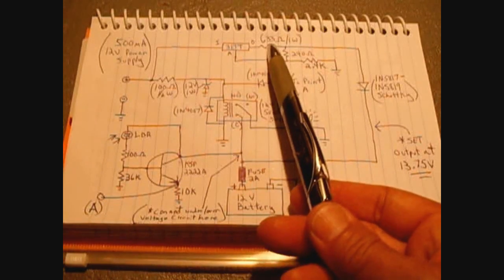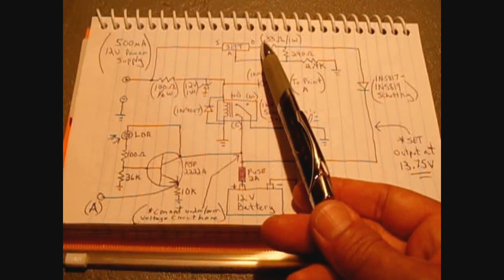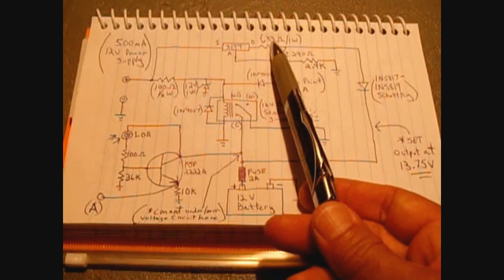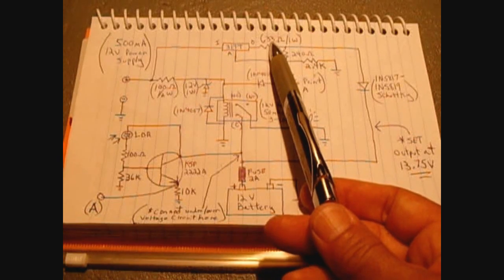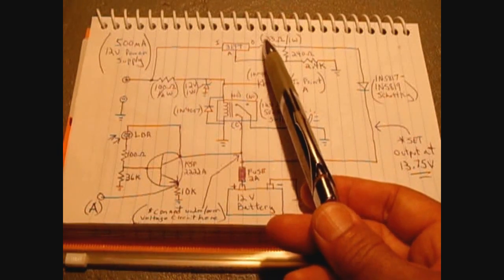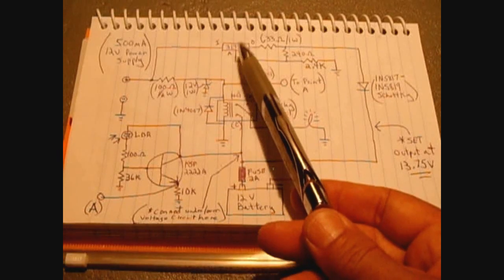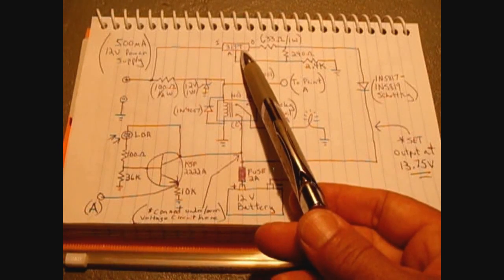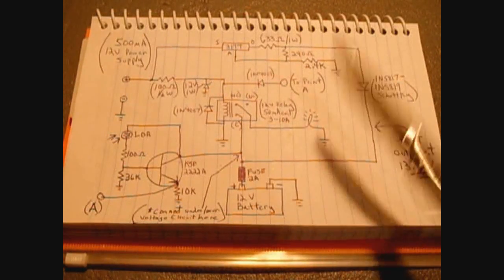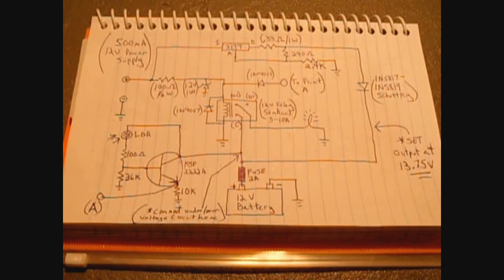If you want more current to charge your battery, you would reduce this value from 0.33 ohm maybe to 0.2 ohm. That might give you 400 milliamps. Make sure you use a very large heat sink with thermal compound on your 317T. It's a really simple circuit. It works outstanding, and what I'm going to do now is show you how I have mine set up.